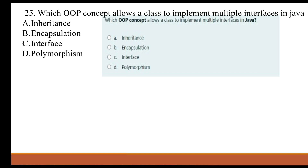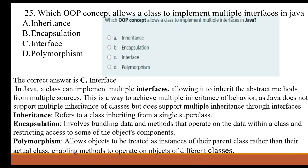The correct answer is C, Interface. In Java, a class can implement multiple interfaces, allowing it to inherit abstract methods from multiple sources. This is a way to achieve multiple inheritance of behavior, as Java does not support multiple inheritance of classes but does support it through interfaces. Inheritance refers to a class inheriting from a single superclass. Encapsulation involves bundling data and methods within a class. Polymorphism allows objects to be treated as instances of their parent class.